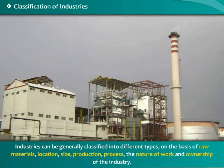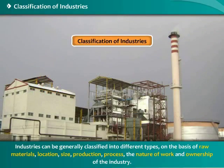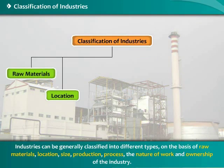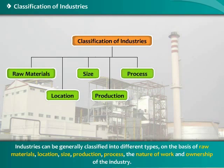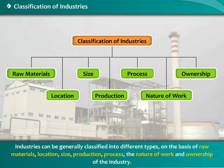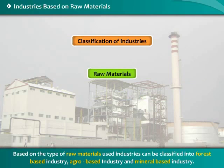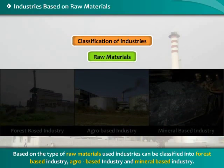Industries can be generally classified into different types on the basis of raw materials, location, size, production process, the nature of work, and ownership of the industry. Based on the type of raw materials used, industries can be classified into several categories.